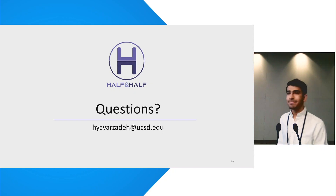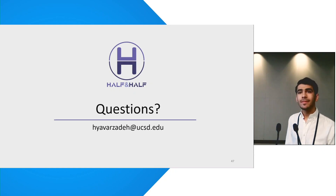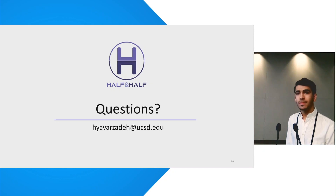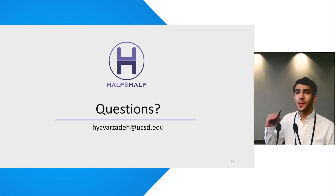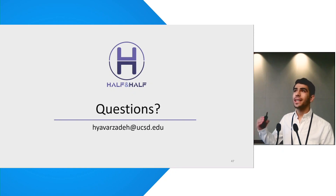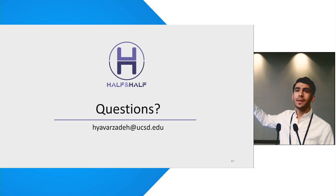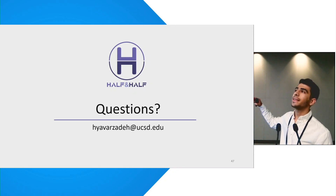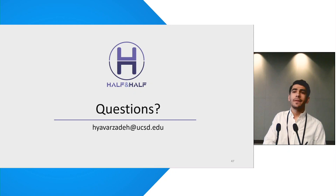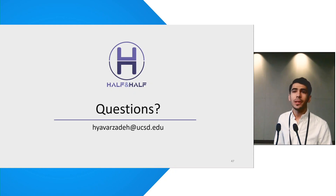Thank you for an interesting talk and nice work. I wanted to ask whether the algorithms or structures you have uncovered have counterparts in indirect branch prediction, and whether they use the same structures — for example, the history registers. For the indirect branch predictor, it is also using global history, and surprisingly it uses a structure similar to the PHR we found, but the length is very different. We found that the PHR length for the conditional branch predictor is 93, whereas for the indirect branch predictor it is just 29 bits. But the structure seems to be, in some cases, similar.